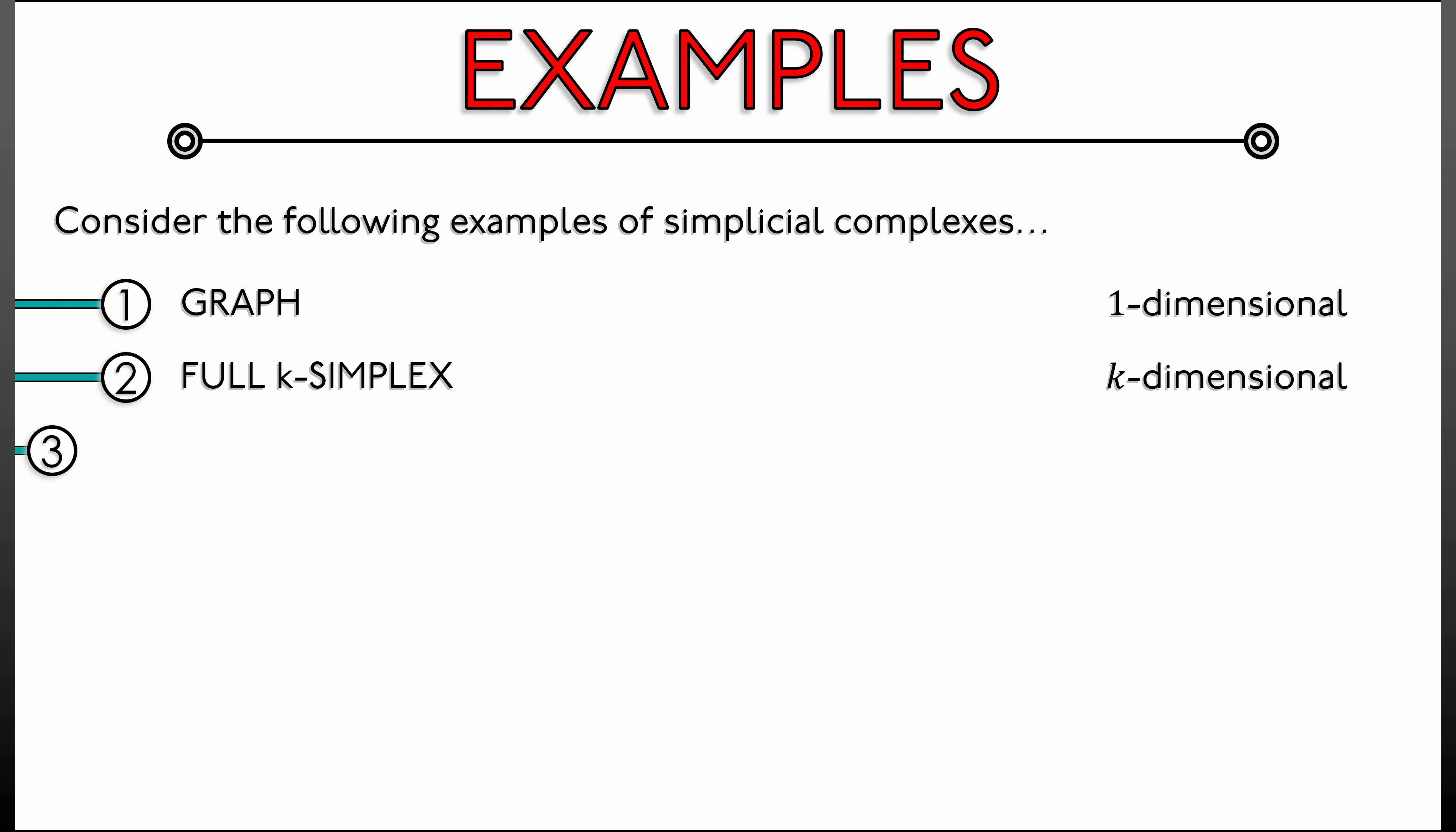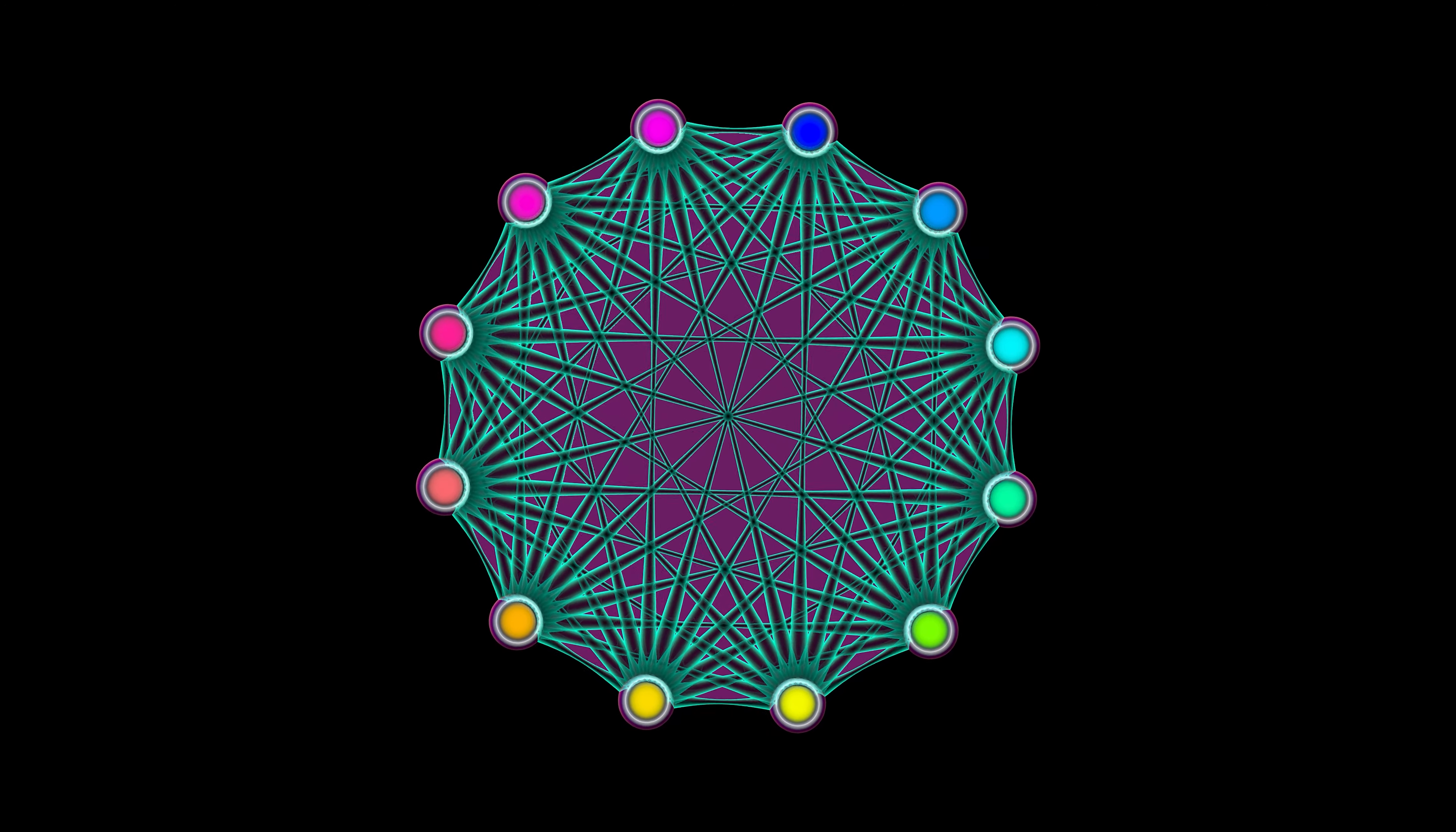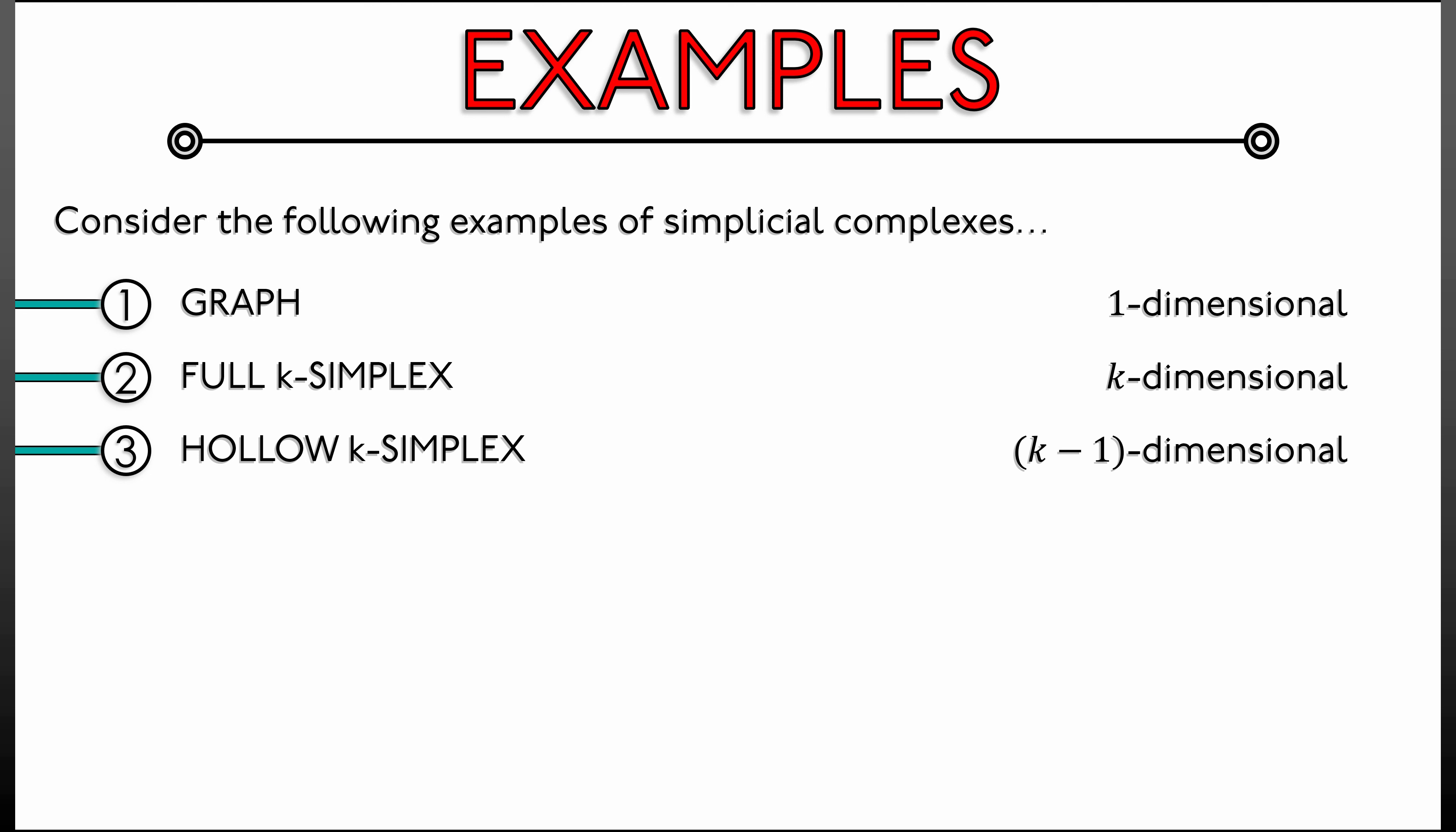Now, we can easily generate a hollow k-simplex from this by deleting that one simplex that consists of all k plus one vertices and keeping everything else. This is still closed with respect to that face relation and thus defines a simplicial complex. It looks the same. It looks just like that full k-simplex, but it's hollow. There's nothing solid on the inside. This is going to be a k minus one dimensional simplicial complex because the highest dimensional simplices are going to be the codimension one faces of that k-simplex. How many such faces are there? That's a good exercise.